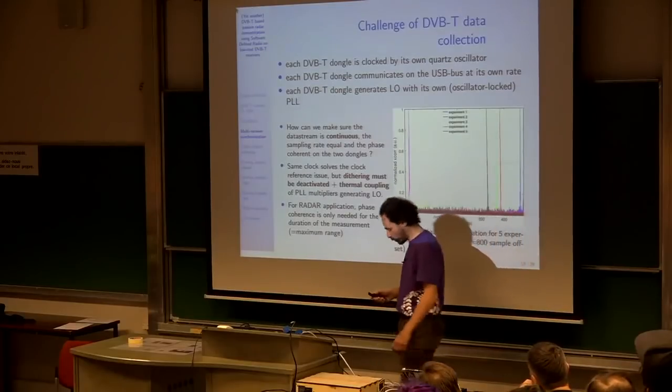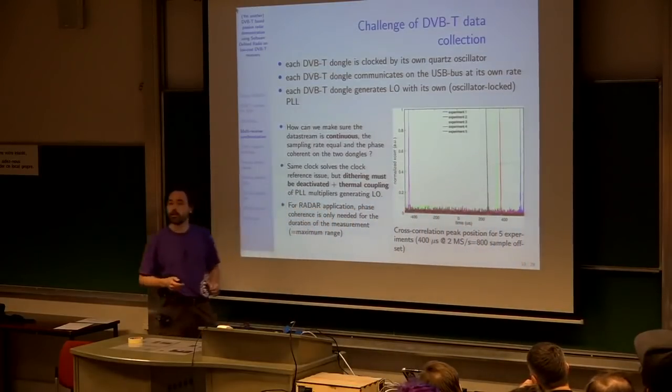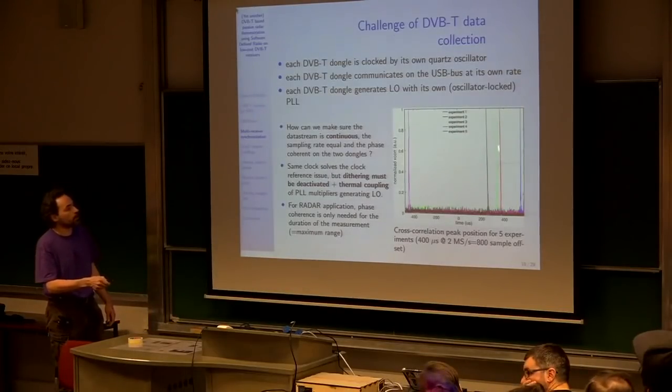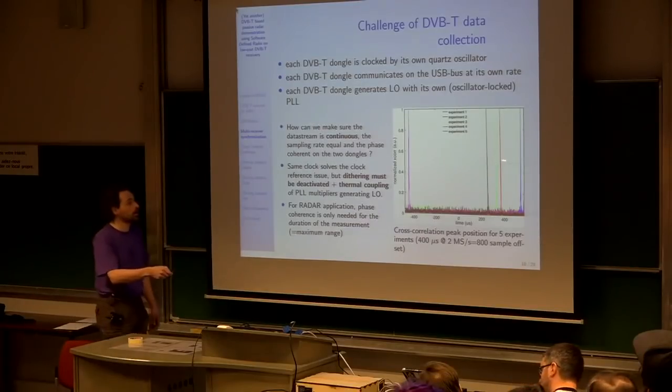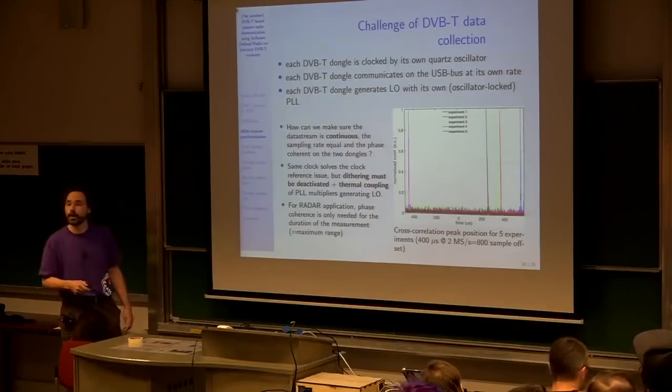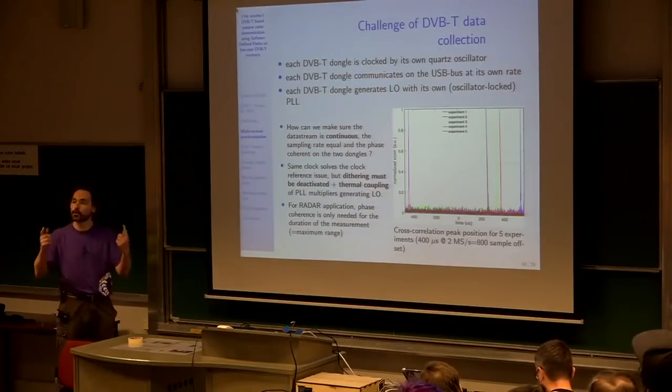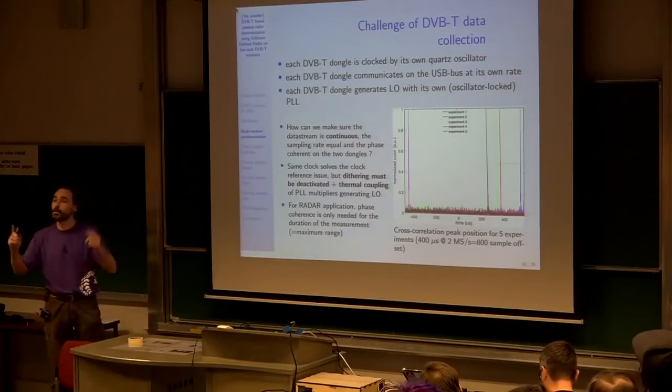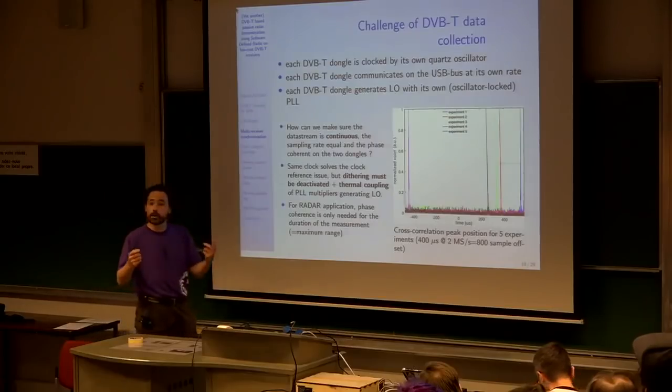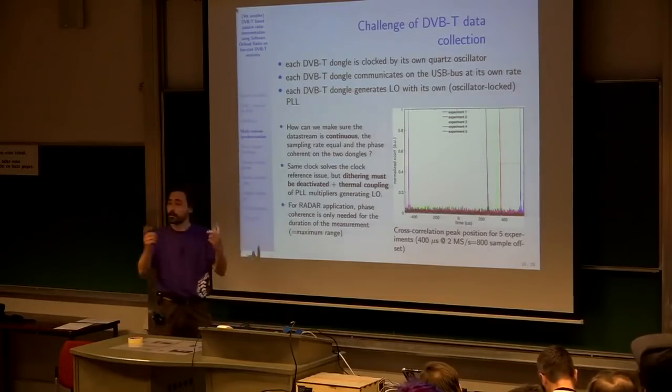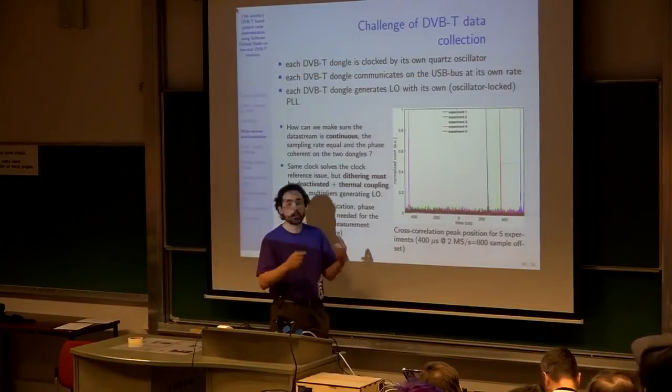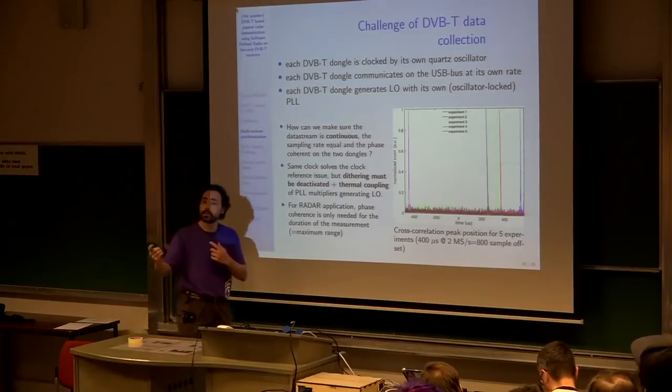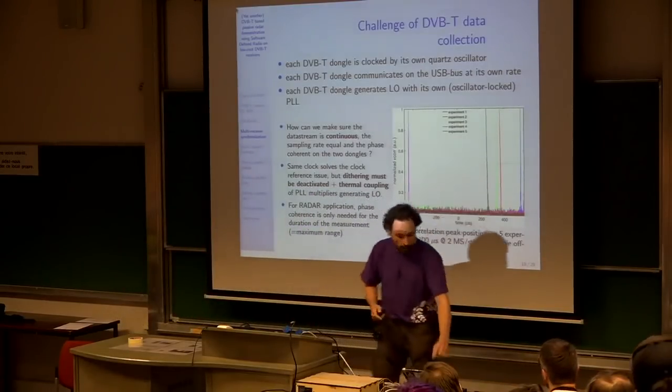Now, are the signals time synchronous? This is five measurements. We just run the same noise generator, and we just do five measurements. You see that the time difference, the point at which the correlation occurs, is different. The first thing that's interesting is we do have a correlation. The fact that we have a correlation means that the two data streams are continuous. However, the time delay between the two USB streams is random. So the challenge of doing passive radar is to calibrate this time offset and to make sure that it remains constant. If you want to calibrate initially, you must make sure you never stop the stream of data.